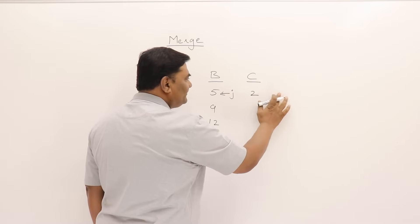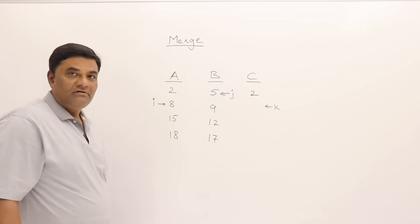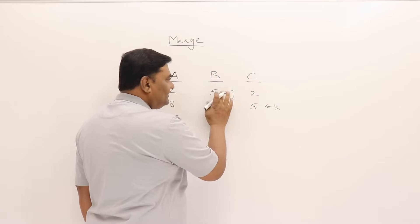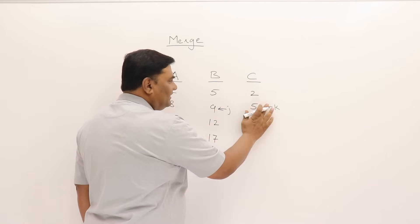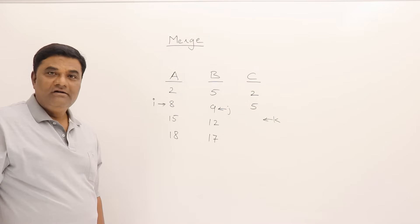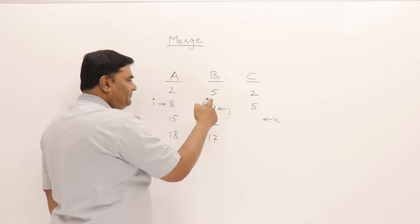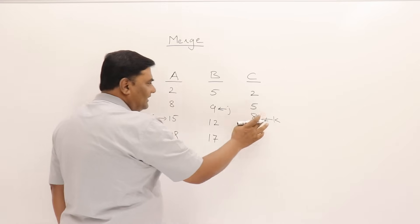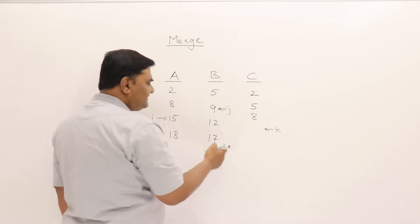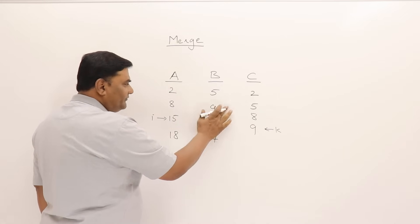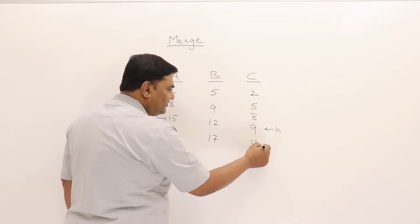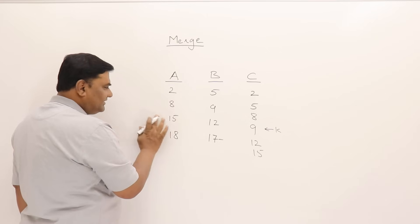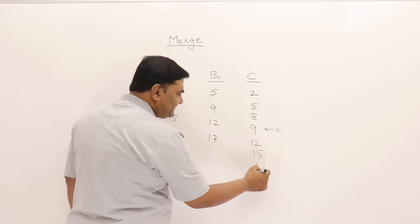After copying, move the index of the copied element and also move K to the next location. Then compare A[I] with B[J] again. If A[I] is smaller, copy it and move to next free location. Continue: 8 is smaller, copy it, move to next, and move K. In the same way, 9 is smaller so 9 is copied, then 12 and 15 — 12 is smaller so it's copied, then 15 and 17 — 15 is smaller, then 17 is compared and copied.